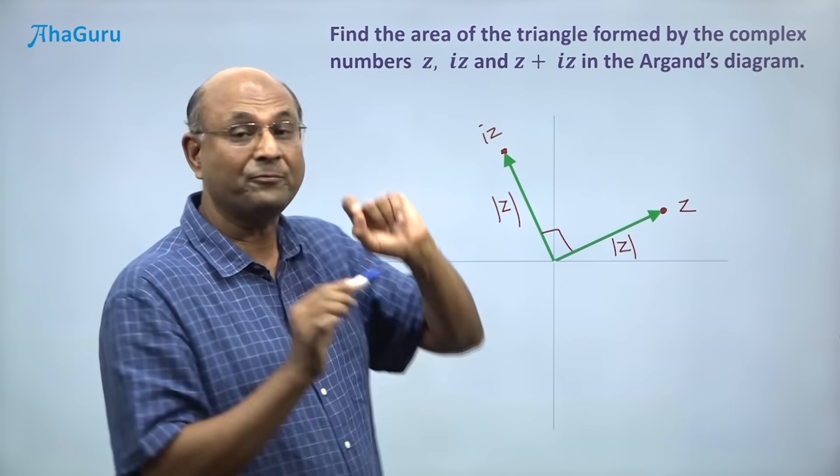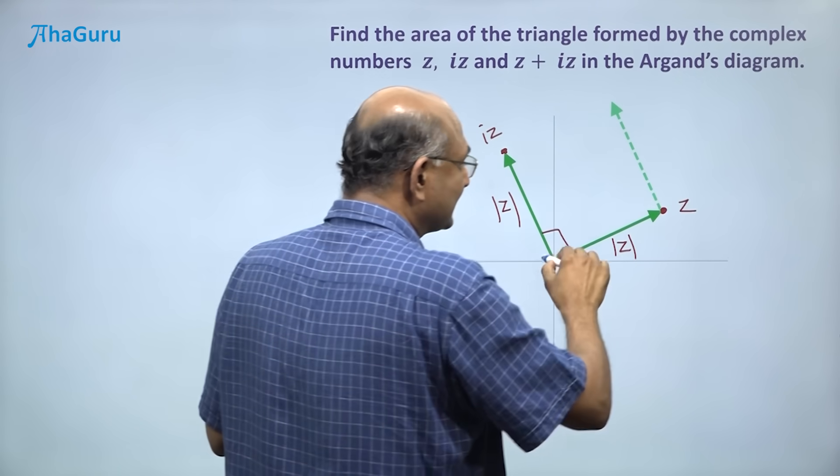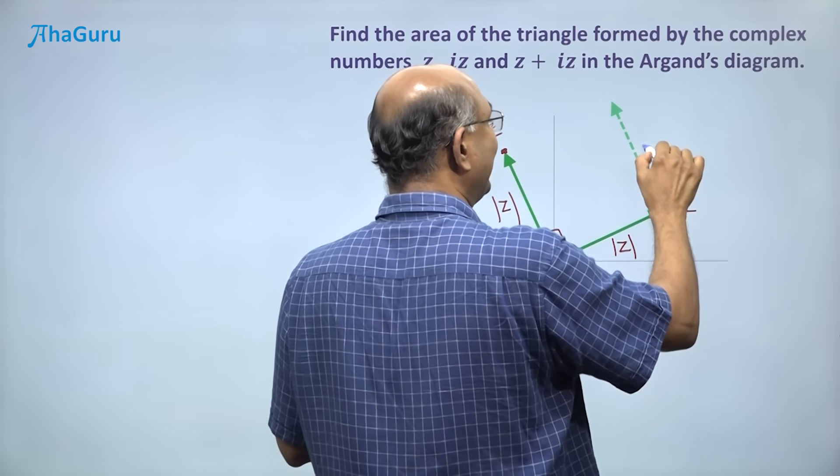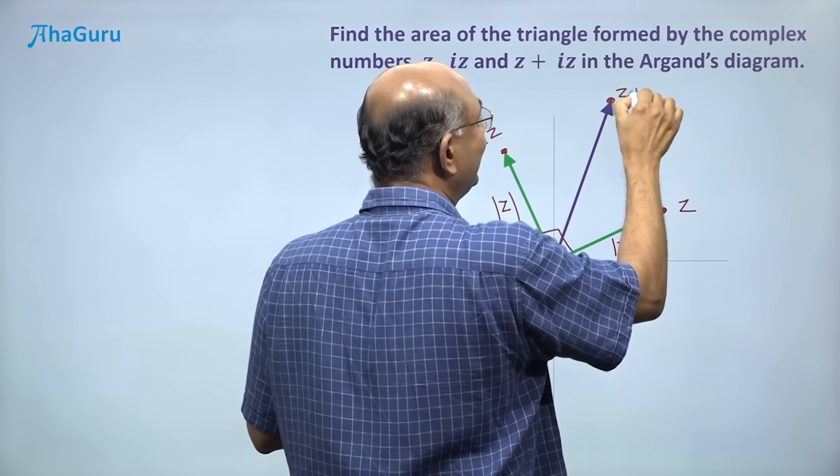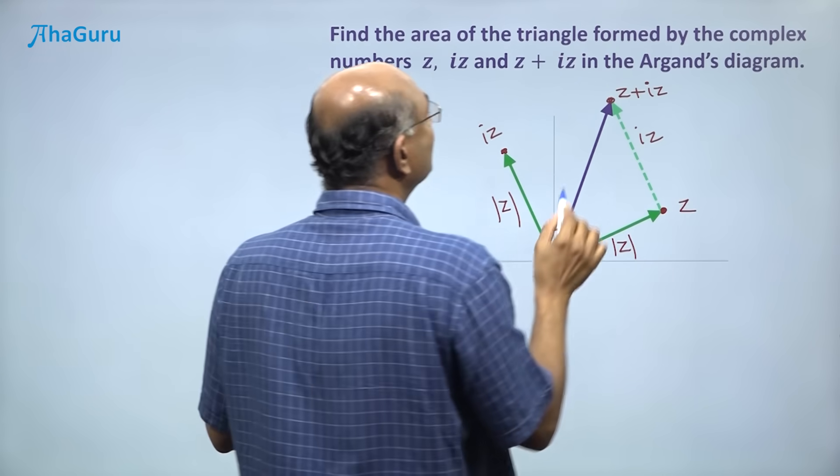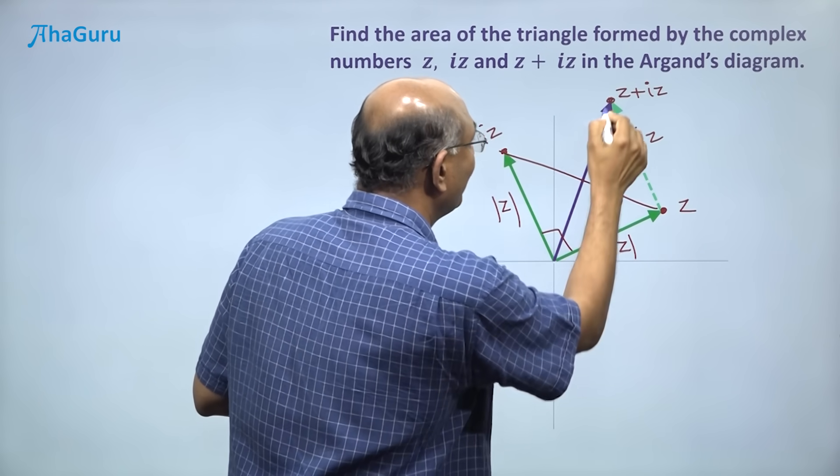And here I want to find z plus iz. For that I will move iz that way. So this is z plus iz. And so this is z plus iz. So we want a triangle formed by z, iz, and z plus iz.